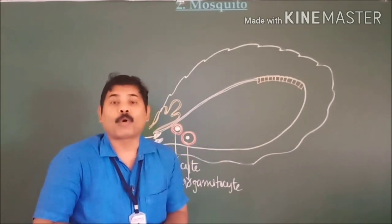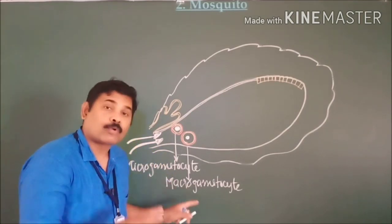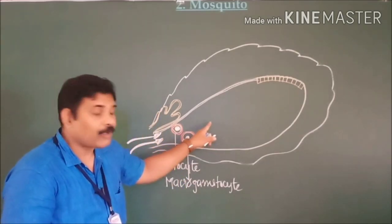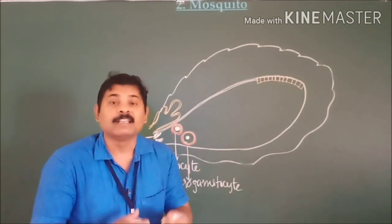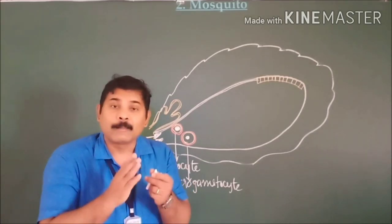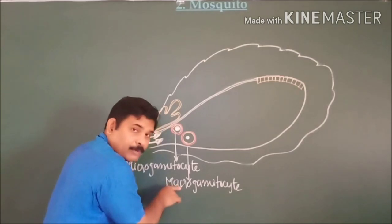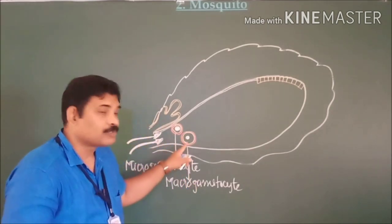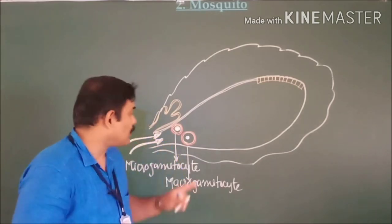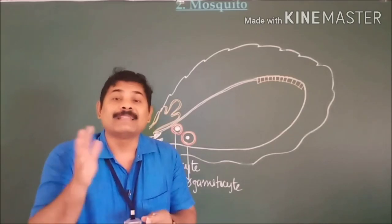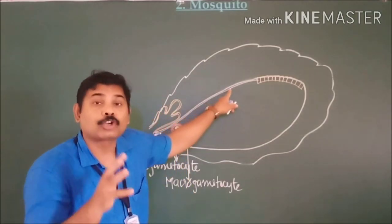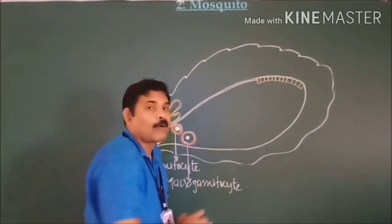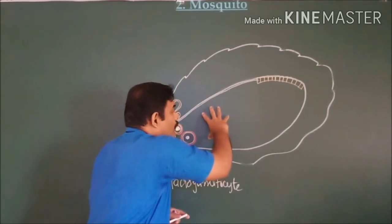A very interesting point: except the micro and macro gametocytes, all the other stages are digested by the mosquito's digestive system through digestive enzymes. The micro gametocyte and macro gametocyte are not digested because anti-enzymes are present within these two. Since these anti-enzymes protect them from enzymatic action, only the gametocytes survive in the crop or digestive system of the mosquito. The sexual cycle of Plasmodium then begins in the crop of the mosquito.